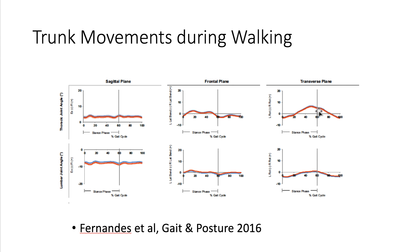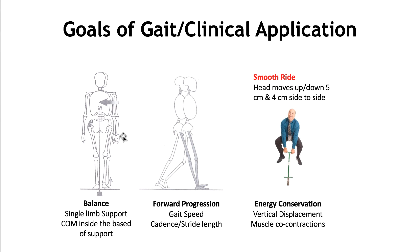In terms of rotation, there's actually quite a lot more motion relative to the sagittal and frontal planes within the spine — upwards of about 5 degrees of thoracic rotation and a few more degrees in the lumbar spine, which gives us that twisting motion when we walk. So essentially, it's safe to say there's not much motion coming from the trunk during gait, which is why we perceive it as a passenger, and the goals of gait are balance, forward progression, and energy conservation.